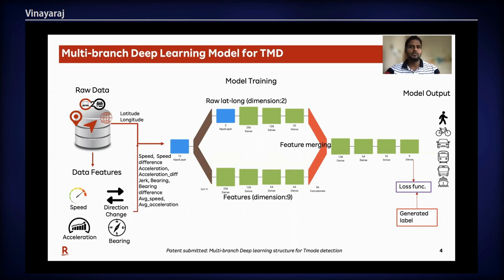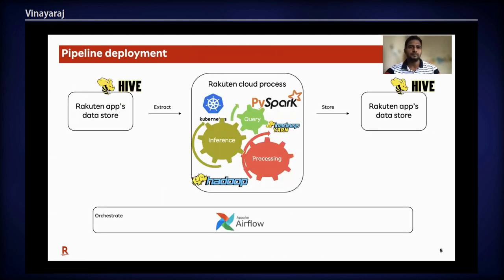Multiple dedicated mobile applications collect big GPS data, and the pipeline gathers daily data and processes it using function as a service. The jobs are scheduled and triggered as a daily batch using Apache Airflow. The implementation utilized Apache Hadoop clusters to process big GPS data, and Apache Hive tables are used to store the daily batch TMD results.